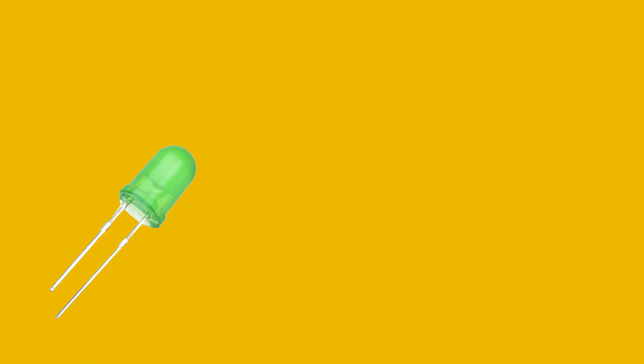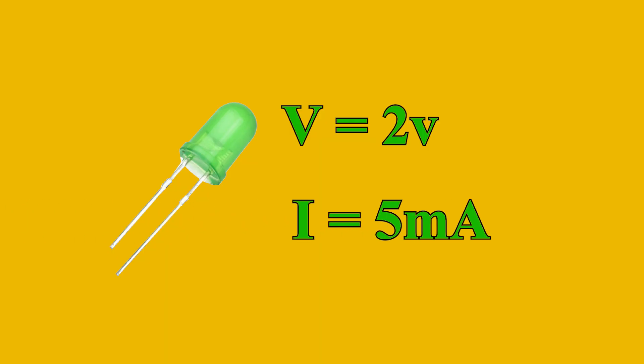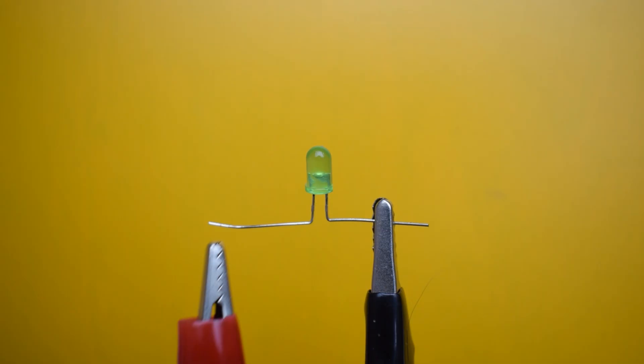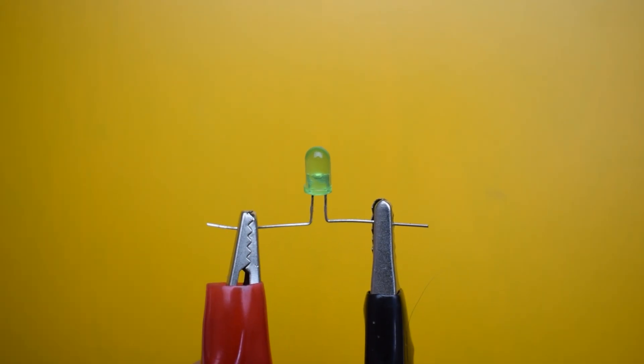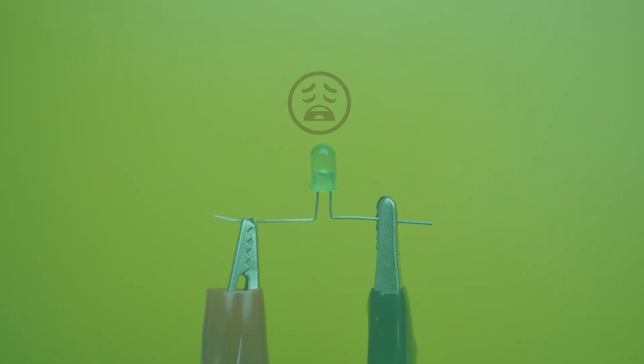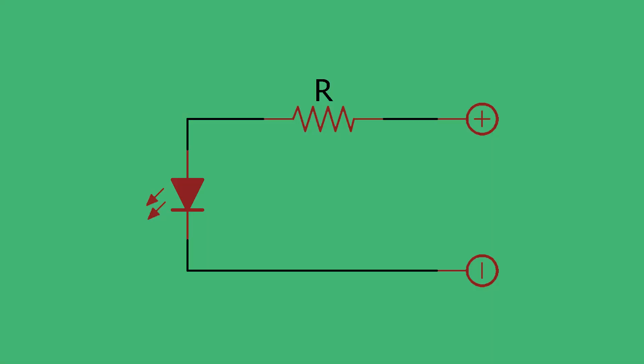The LED we're using has a working voltage of around 2 volts and a safe operating current of about 5 milliamps. If we connect this LED directly to the power supply, way too much current would flow through the LED and it would burn out almost instantly. That's why we add a series resistor. The resistor limits the current and drops the extra voltage, so the LED lights up properly and safely.